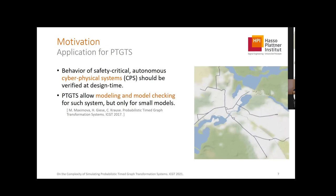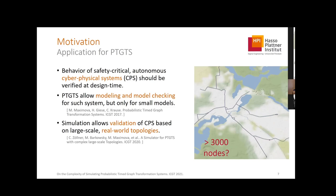However, we wanted to look at larger examples. For instance, this is a graph for the tram network of the city of Potsdam, where our university is, and we modeled it with some 3,000 nodes. For this, our model-checking approach wasn't usable anymore, and that's why we introduced our simulator for probabilistic time graph transformation systems. We can do validation on these real-world systems and might find conflicts — problematic constellations we didn't think of before with model-checking.